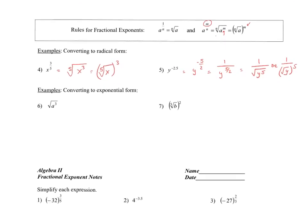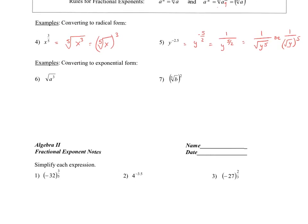Now, what if it's in radical form and we want to convert it to exponential form? The first thing I would do, if there's no root index, is make sure to fill that in — it's understood that there's a 2, that it's the square root. So this would become a to the — the exponent goes in the numerator, root index goes in the denominator — so a to the 3/2. Number seven, same deal: b to the 2/5, exponent in the numerator, root index in the denominator.